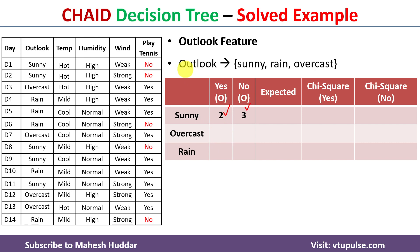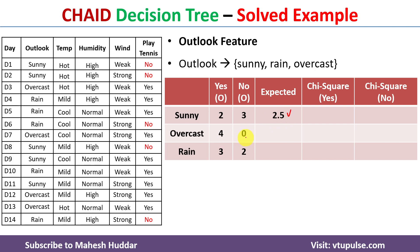Similarly, we count how many 'yes' and 'no' examples exist for outlook equals overcast and outlook equals rain. That is what is written in the table. Once we have the observed values, we calculate the expected number of examples by adding the 'yes' and 'no' observed values and dividing by 2. For sunny: (2 + 3) / 2 = 2.5; for overcast: (4 + 0) / 2 = 2; for rain: (3 + 2) / 2 = 2.5.